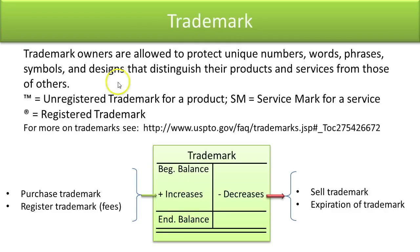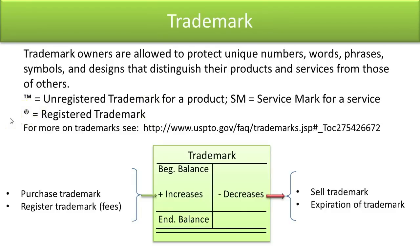Trademarks: trademark owners are allowed to protect unique numbers, words, phrases, symbols, and designs that distinguish their products and services from others. You might see TM for a product trademark, SM for a service mark, or the registered ® symbol if officially registered. The trademark account increases when you buy trademarks or pay fees to register, and decreases as the trademark expires or you sell it.